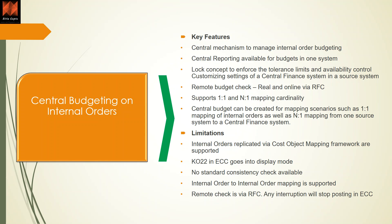There are some good benefits and some limitations to this feature. It is very easy in the central mechanism to maintain internal order budgeting rather than doing it in multiple systems — you do it in one system. Central reporting is available for budget, which makes it easy from a reporting perspective. The remote budget check is real-time and online. It also supports one-to-one and many-to-one mapping cardinality for internal orders, so central budgeting can be created for both one-to-one and many-to-one mapping scenarios.